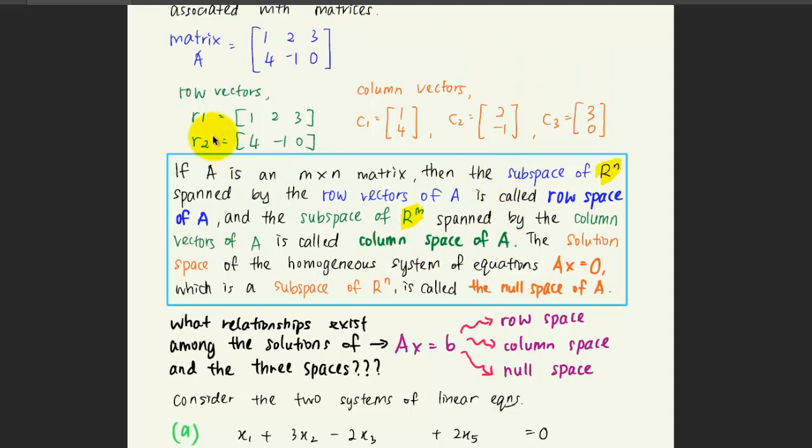So let's look at this example here. The row of A is row 1 and row 2, with 3 columns. That's why we call the subspace of Rn, corresponding to the number of columns spanned by the row vectors of A. And for the column vectors of A, which is the 1, 4, 2, negative 1, and 3, 0, actually depends on the number of rows here.